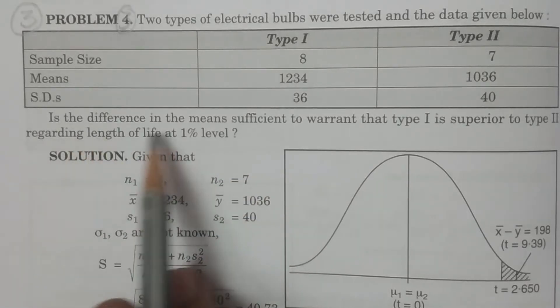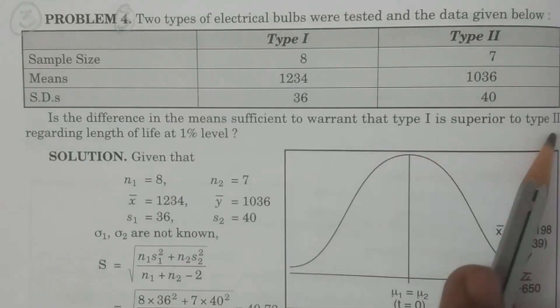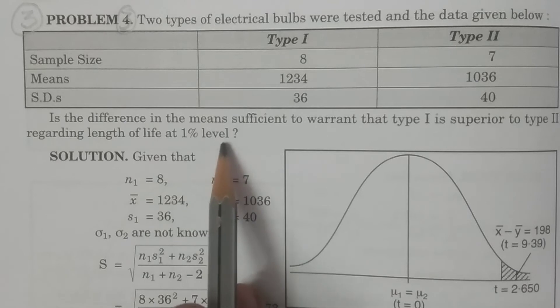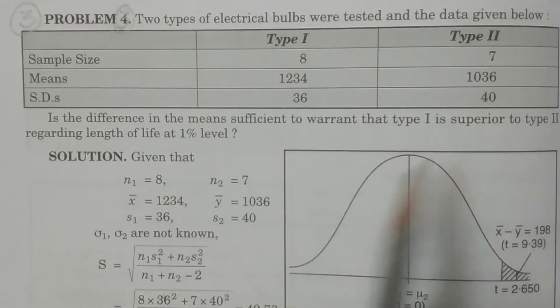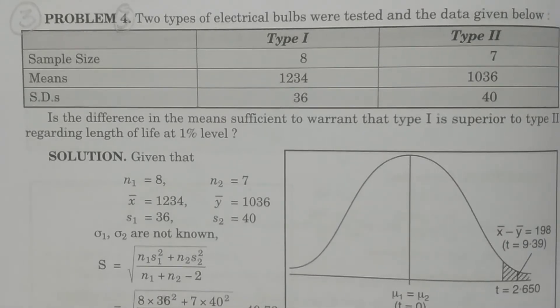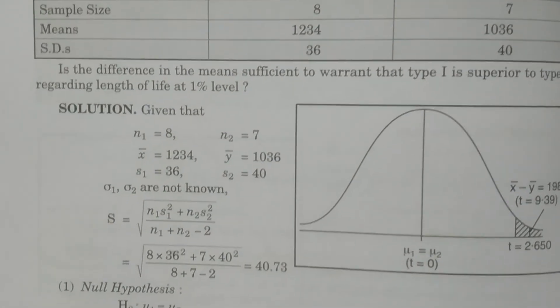You see the question: is the difference in the means sufficient to warrant that Type 1 is superior to Type 2 regarding the length of the life at 1 percent level? So the question is whether Type 1 is superior to Type 2 regarding the average lifetime. That we have to test. So based on this particular information, sigma is not given.